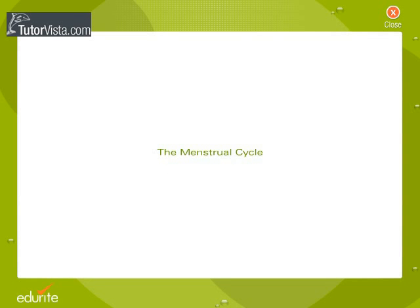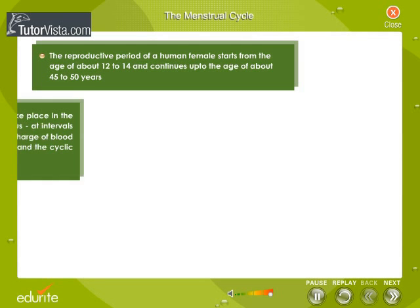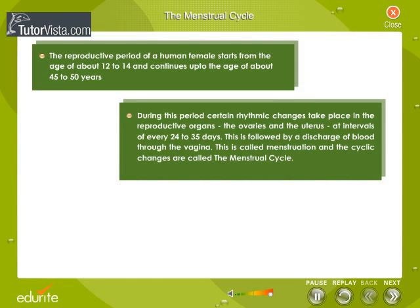The Menstrual Cycle. The reproductive period of a human female starts from the age of about 12 to 14 and continues up to the age of about 45 to 50 years. During this period, certain rhythmic changes take place in the reproductive organs, the ovaries and the uterus, at intervals of every 24 to 35 days.